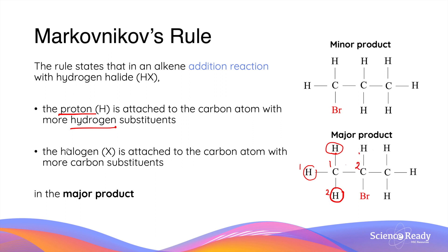In other words, Markovnikov's rule also states that the halogen atom is attached to the carbon atom with more carbon atoms attached to it. Again, in the major product example, the bromine atom preferentially is added to the second carbon in the molecule, as the second carbon is attached to two nearby carbon atoms.